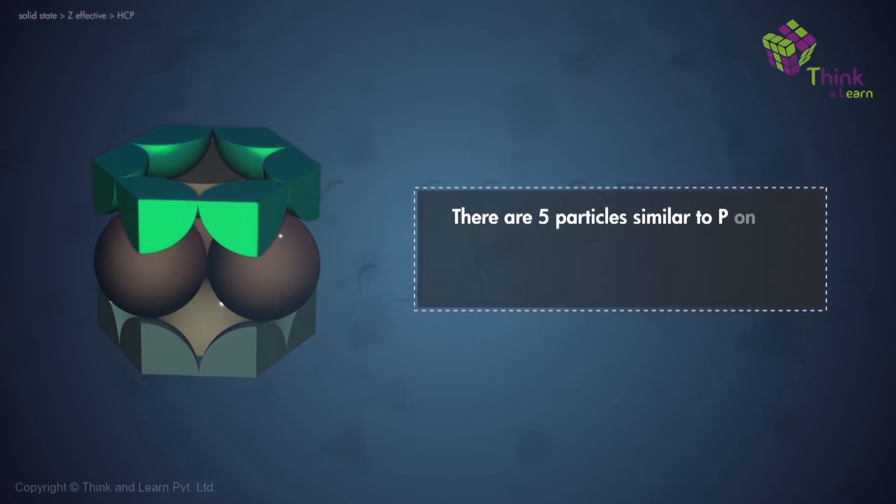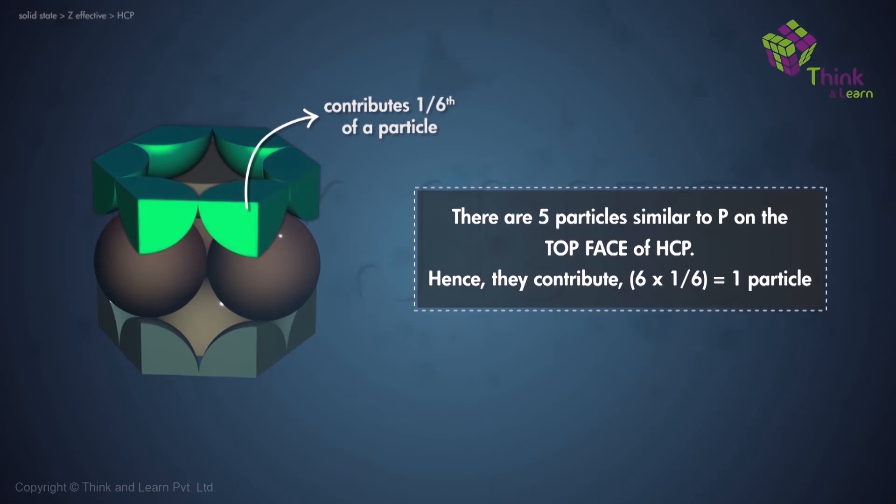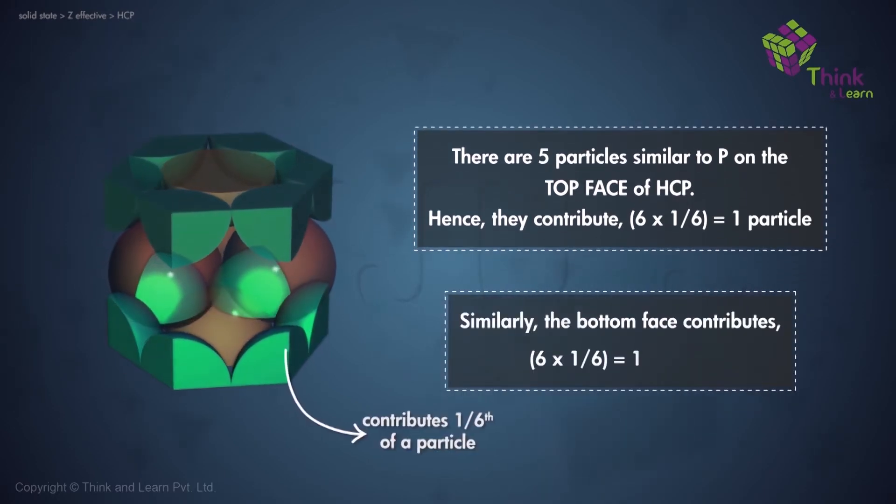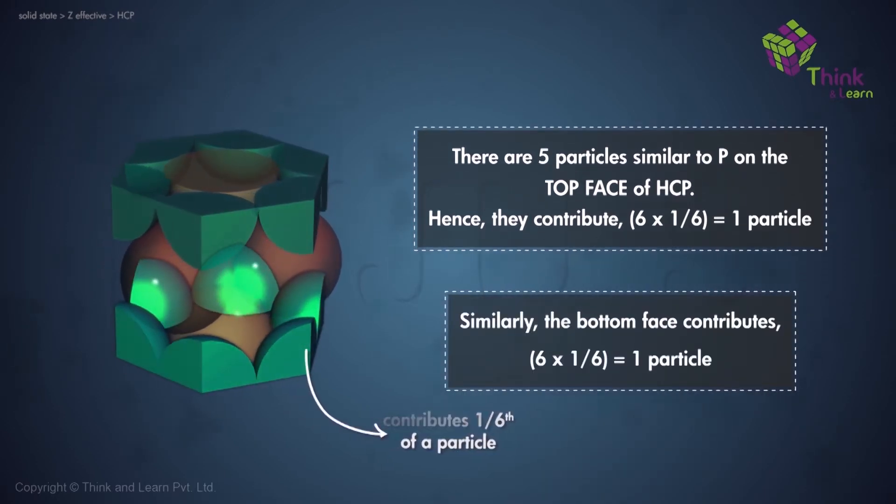Now, on the top face of the hexagon at the corners, there are six such particles. So therefore, these particles similar to P give six into one by six, which is one particle for unit cell U1. Similarly, the bottom face will contribute one more particle, six into one by six over there as well.